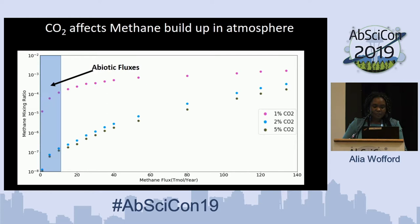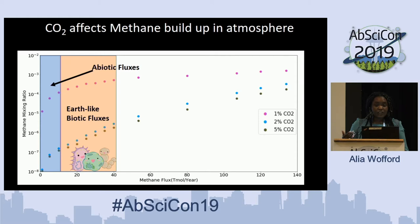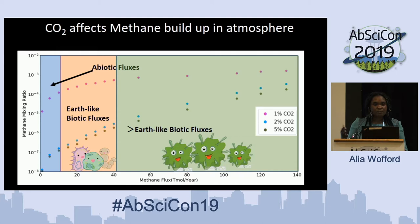In our parameters, 0 to approximately 10 teramoles per year are your abiotic fluxes. We also simulate Earth-like fluxes, approximately 10 to 40 teramoles per year, which would be your Earth-like biofluxes. We also simulate even greater biological fluxes, because we frankly don't know what methane budgets could be for some exoplanets.